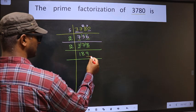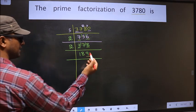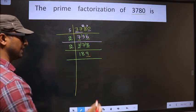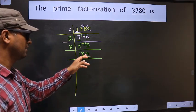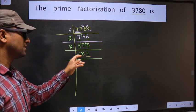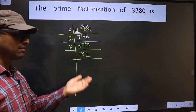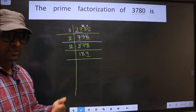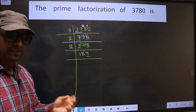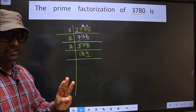Now, for this number, the last digit is 9, which is not even. So this number is not divisible by 2. Next, prime number 3.